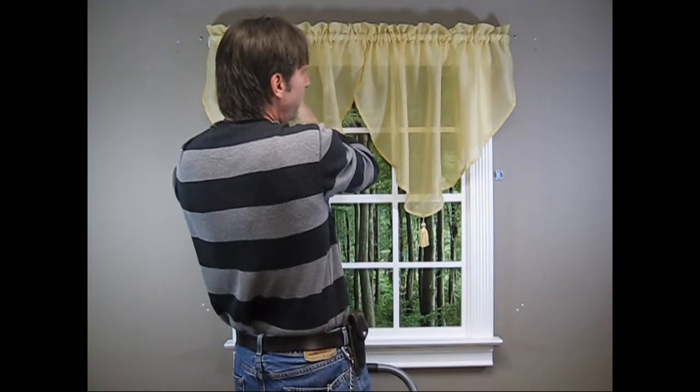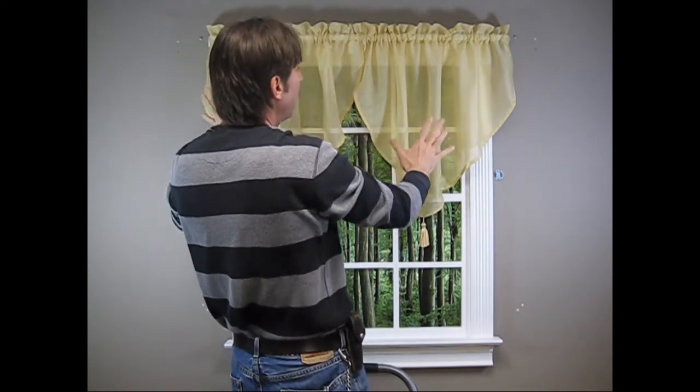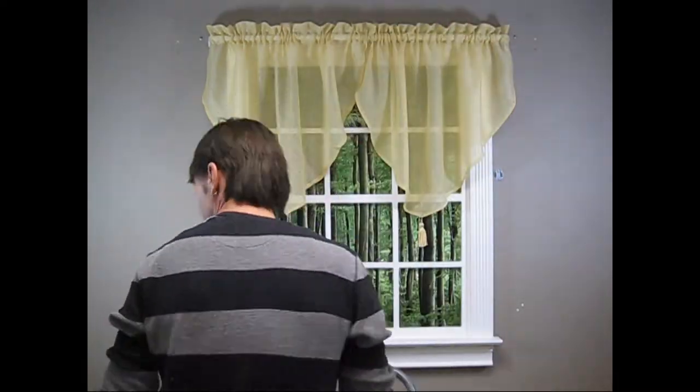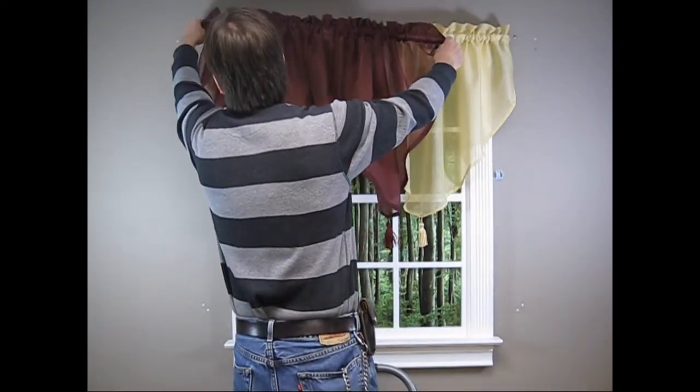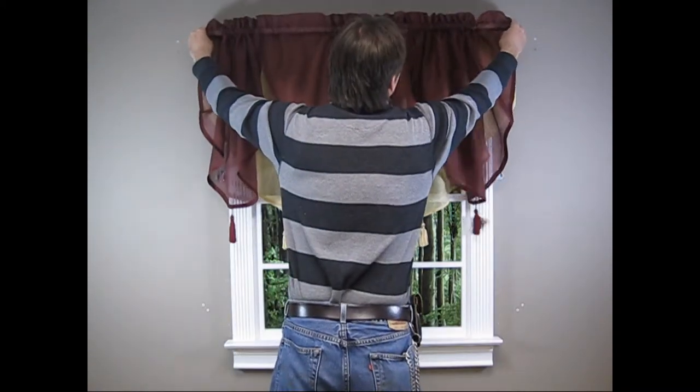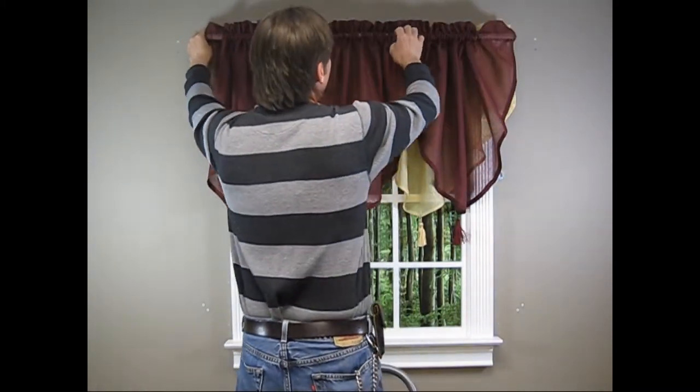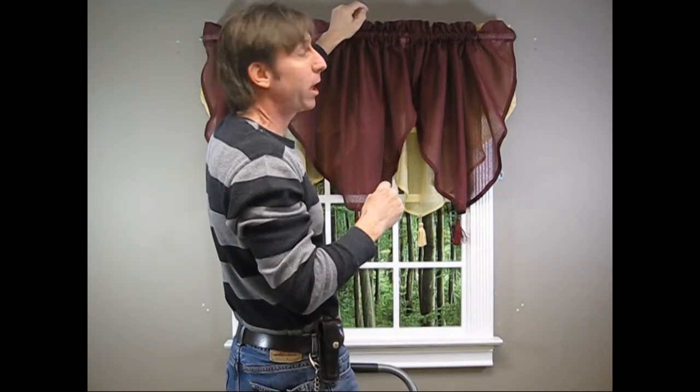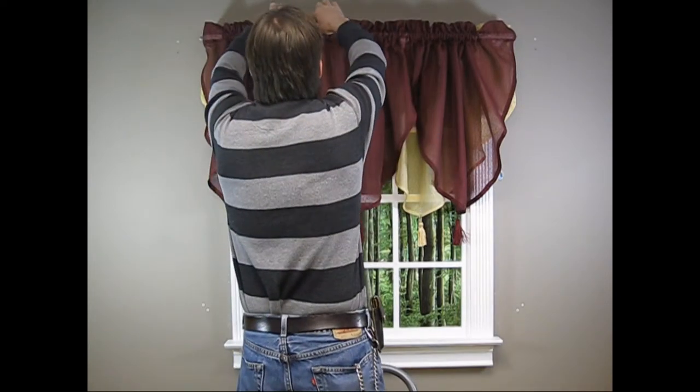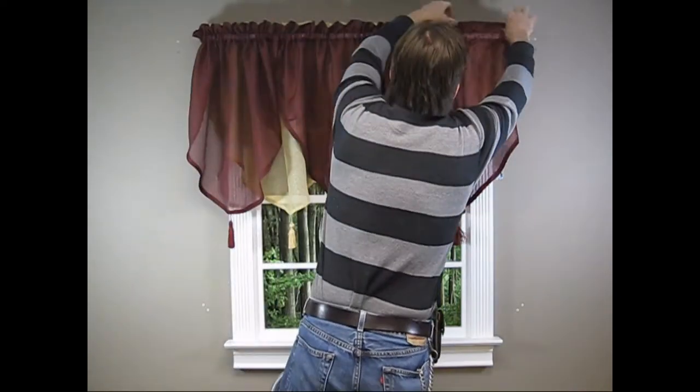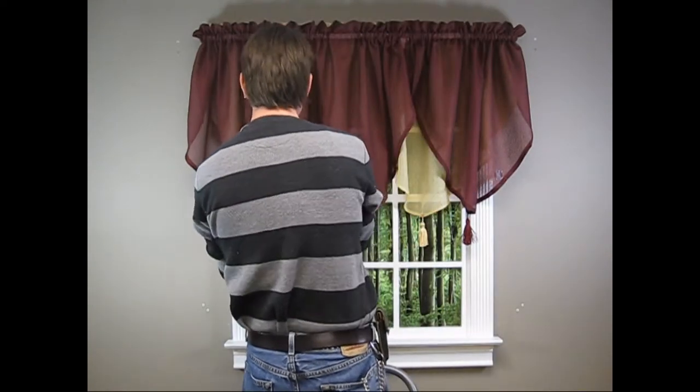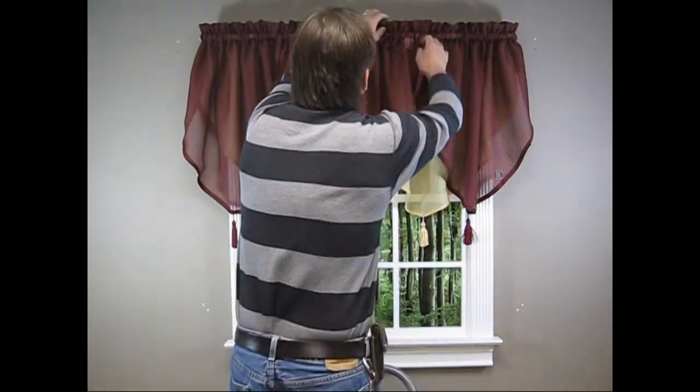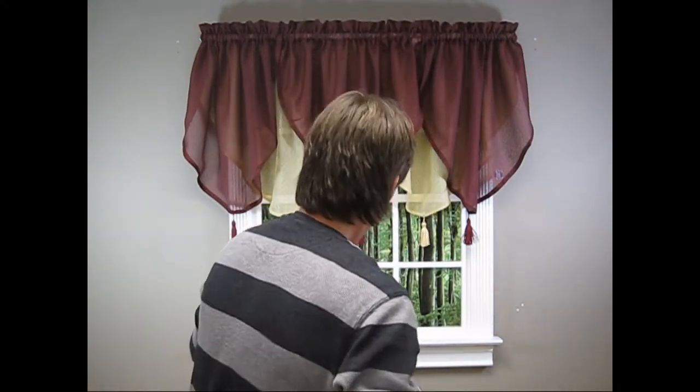One, two, three, four, five. As you can see, one rod's going to be installed over the other because the outer rod has a three-and-a-half-inch projection out from the wall and the inner rod has a two-and-a-half-inch projection, allowing one to be installed over the other.